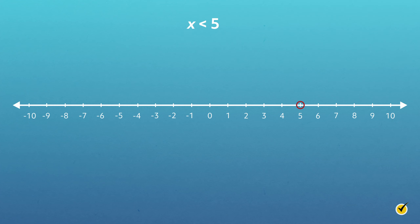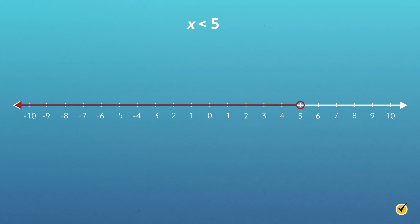Next, draw a line on the number line to indicate the possible solutions for x. Since x is less than 5, we need to draw a line to the left of 5. Notice that the line extends to the left with an arrow at the end. The arrow indicates that even though the number line ends at negative 10, there are an infinite number of solutions — numbers smaller than negative 10 — that can make this inequality true.